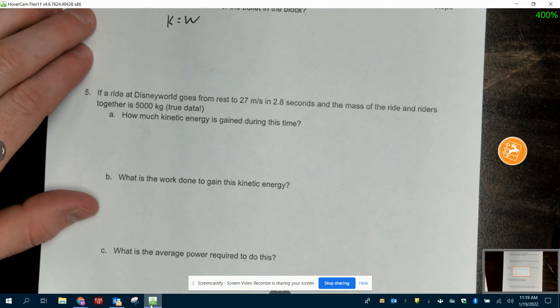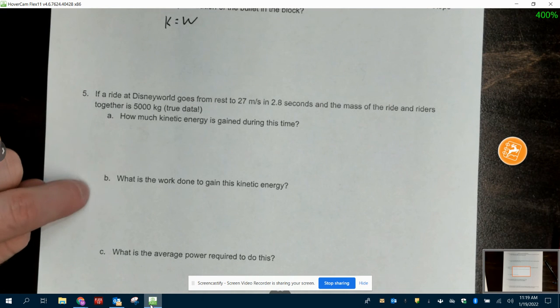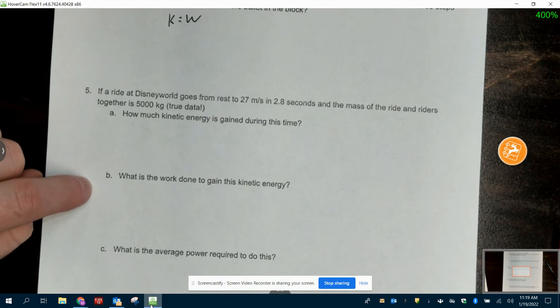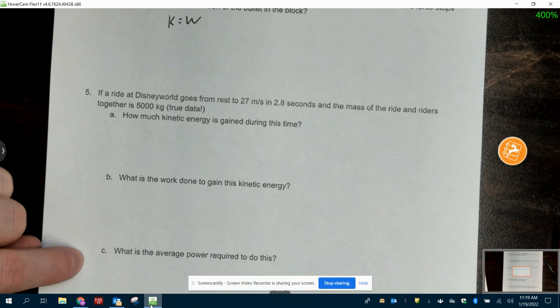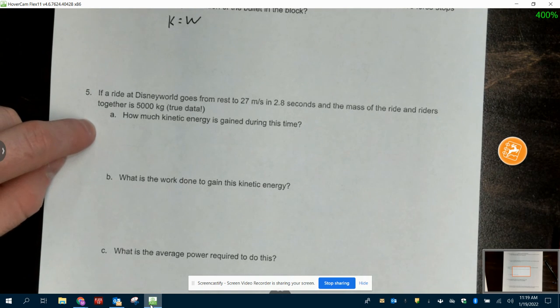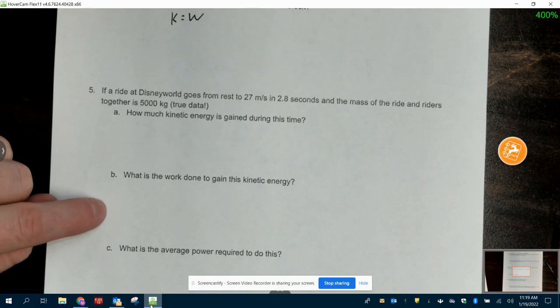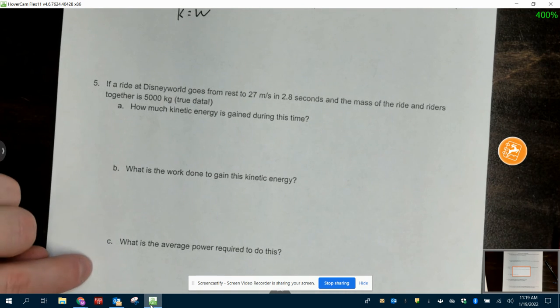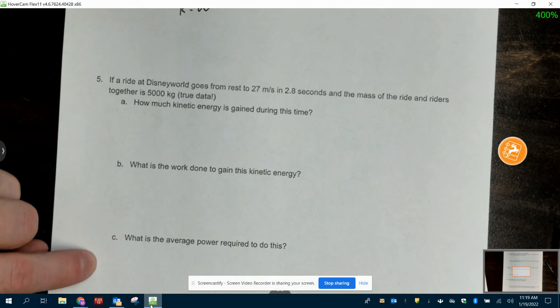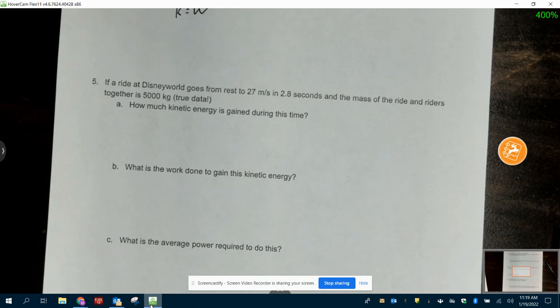If a ride at Disney World goes from rest to 27.8 meters per second in 2.8 seconds, and the mass of the ride and riders together is 5,000 kilograms, how much kinetic energy is gained? What is the work done to gain kinetic energy and power? This is going to be K. You just do one half mv squared. Your work is equal to the kinetic energy, so it's the same answer. And then to get power, it's work over time. That's it. You've got the rest of the class to work on this stuff.